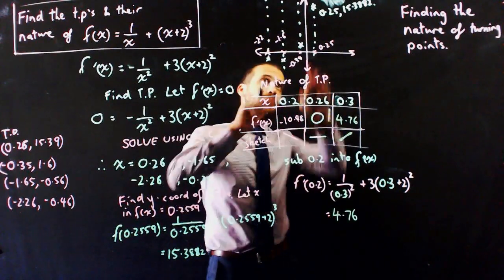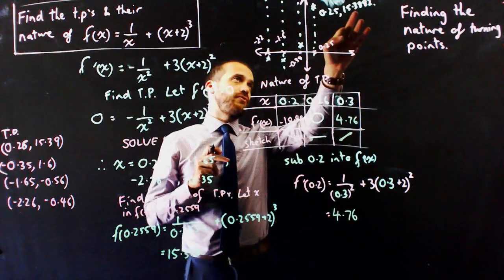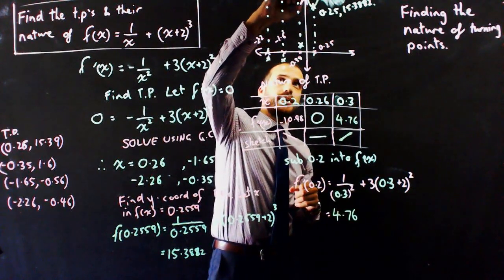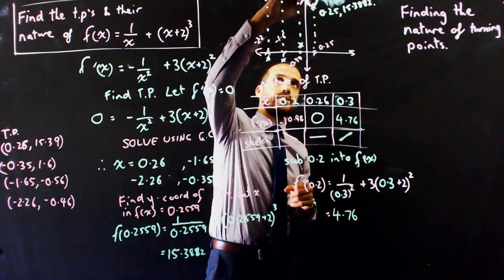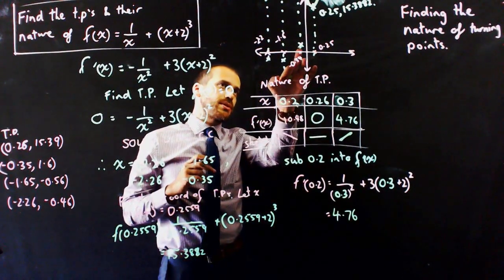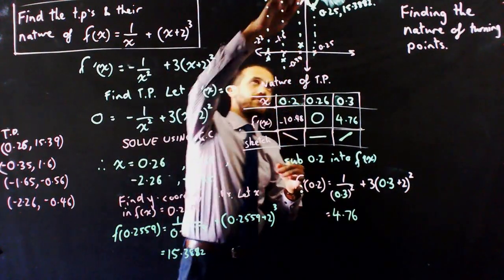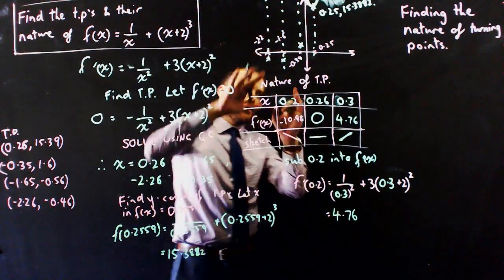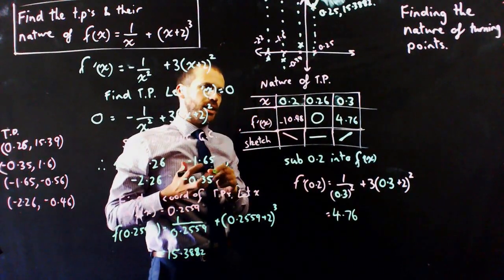So as suspected, this point, (0.25, 15.3882), is a turning point that goes like that. I don't really know what happens with this turning point because if that's a turning point and that's my next turning point, it doesn't matter whether it's like that or like that. I don't really know how they're going to join up.